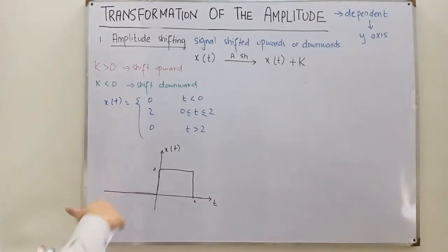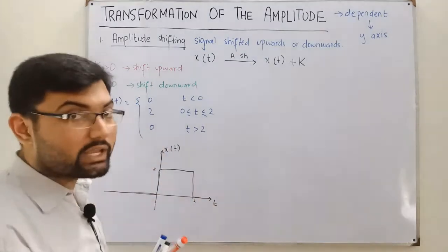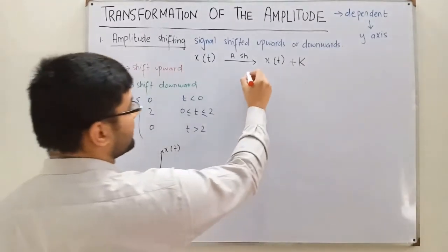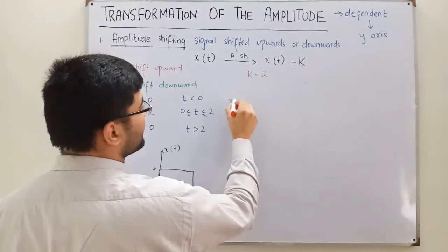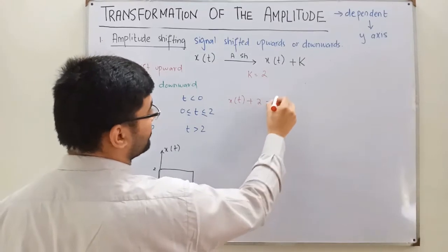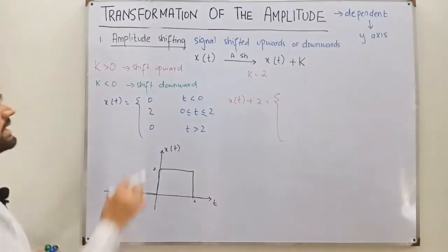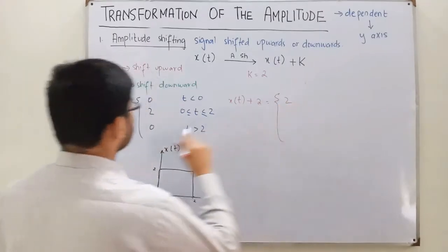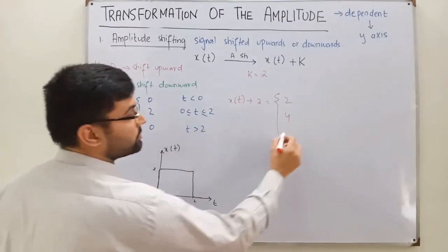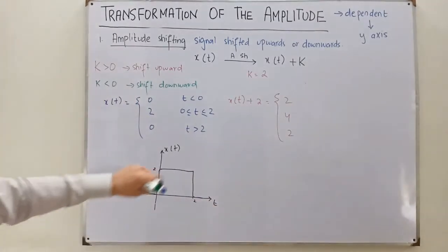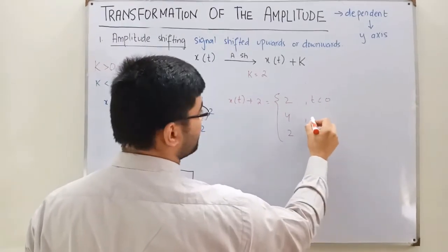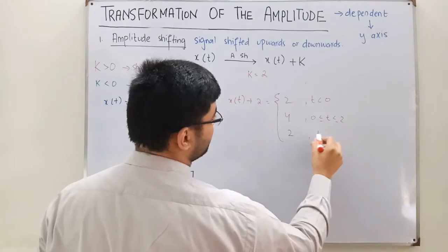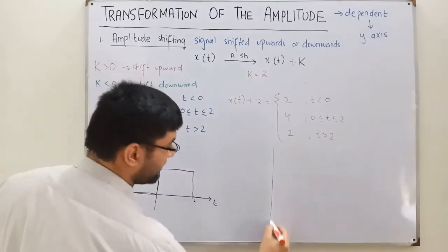Now let's apply amplitude shifting with a positive value of k — say k equals 2. The new signal is x(t) + 2. You add 2 to each and every value: 0 + 2 = 2, 2 + 2 = 4, and 0 + 2 = 2. Note that the independent variable remains the same — still t < 0, 0 ≤ t ≤ 2, and t > 2.